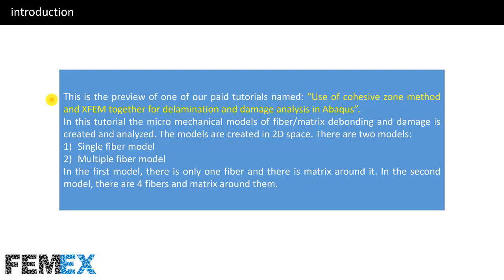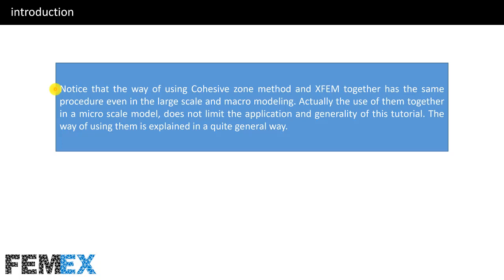In this tutorial, the micro-mechanical model of fiber-matrix debonding and damage is created and analyzed. The models are created in 2D space. There are two models: a single fiber model and a multiple fiber model. In the first model there is only one fiber with matrix around it; in the second model there are four fibers with matrix around them. Note that the way of using cohesive zone method and XFEM together has the same procedure even in large-scale and macro modeling — the use of them together in a micro-scale model does not limit the application and generality of this tutorial.